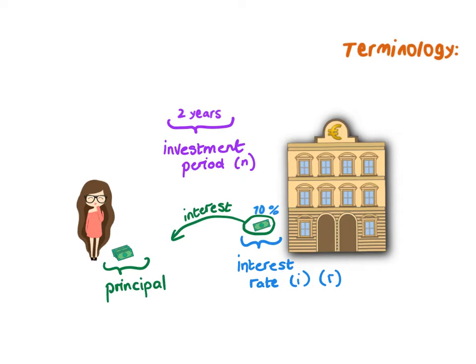So some basic terminology: the investment period, the principal amount, and the interest amount — which is different to the interest rate. The interest amount gets added to the principal amount so that you have more money. The interest amount is money and the principal amount is money, but the interest rate is really just the percentage at which they calculate how much you will get. Don't get the interest rate confused with the interest amount — the interest rate is the percentage at which your investment interest is calculated over your investment period.